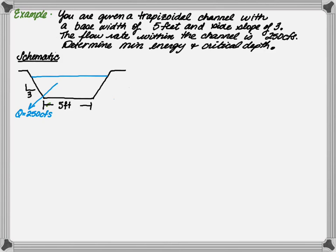Our next example has a similar case. You're given a trapezoidal channel with a base width of 5 and side slopes of 3 to 1. The flow rate is still 250 CFS. This time, we want to determine the minimum energy and the critical depth.